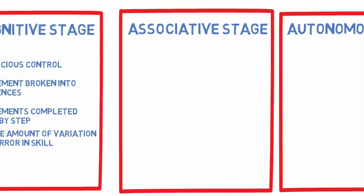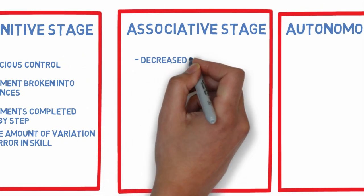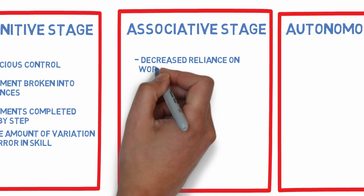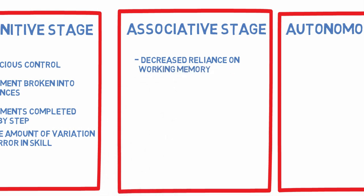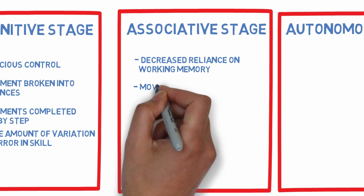As the learner reaches the associative stage, information begins to operate through proceduralised processes separate from working memory and movement becomes fluent in motion.